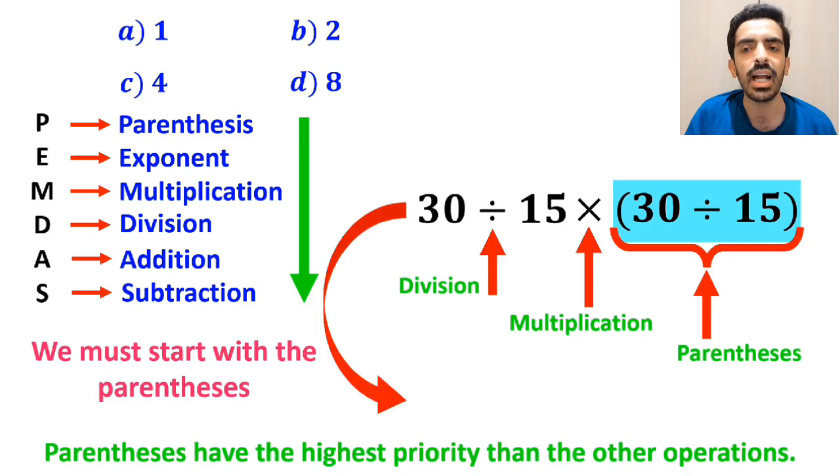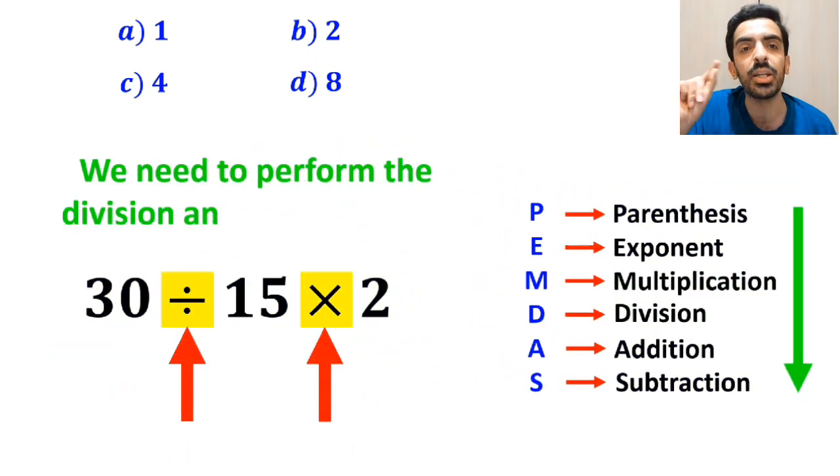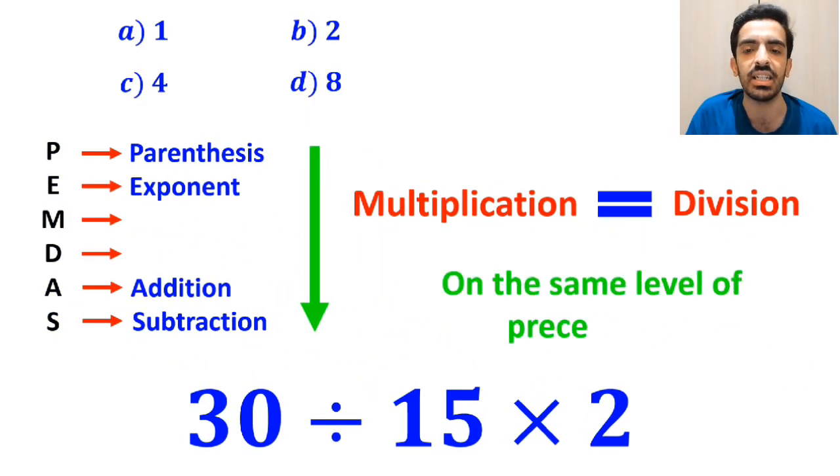So, we can rewrite this expression as 30 divided by 15 multiplied by 2. Now we need to perform the division and multiplication. However, it's very important to keep in mind that multiplication and division are on the same level of precedence.